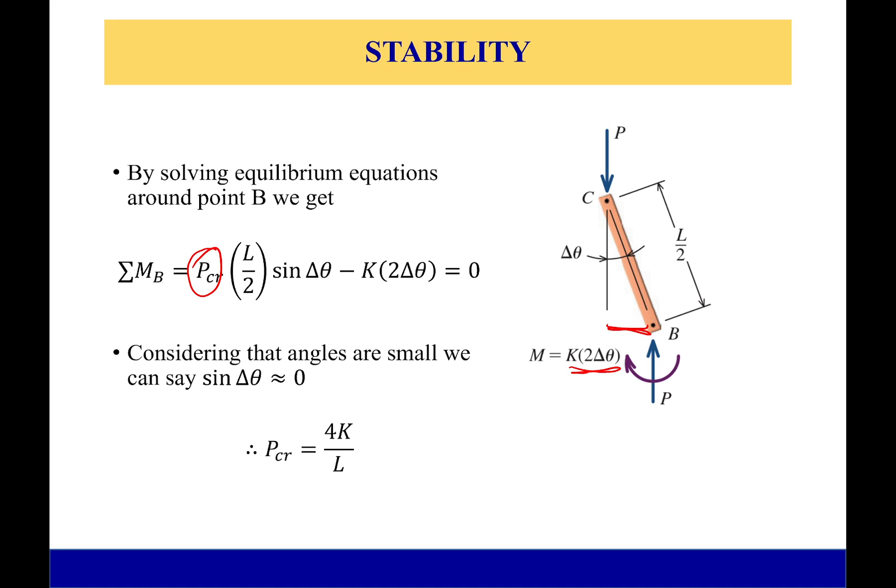Since we're going to assume that all these angles are very very small, that term right there is going to be around zero—not 100%, but very very close.